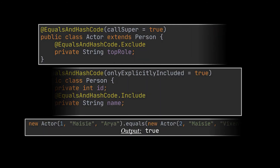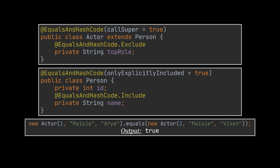The @EqualsAndHashCode annotation is next. This one generates the equals and hashCode methods, and its customizations are similar to @ToString. We can exclude a field using the @EqualsAndHashCode.Exclude annotation — when excluded from one method it should be excluded from the other as well. To cherry-pick which fields are included, use @EqualsAndHashCode.Include. Finally, the callSuper argument enables or disables calling the superclass when equals or hashCode is invoked on a child class instance.